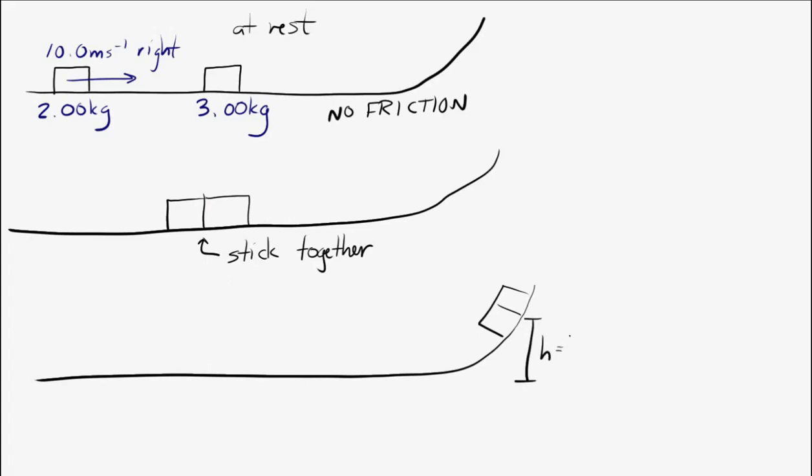Because those two blocks are going to go off, speeding along to the right. And they're going to go up the hill. And eventually they'll get to their maximum height and they'll stop and then they'll slide back down.